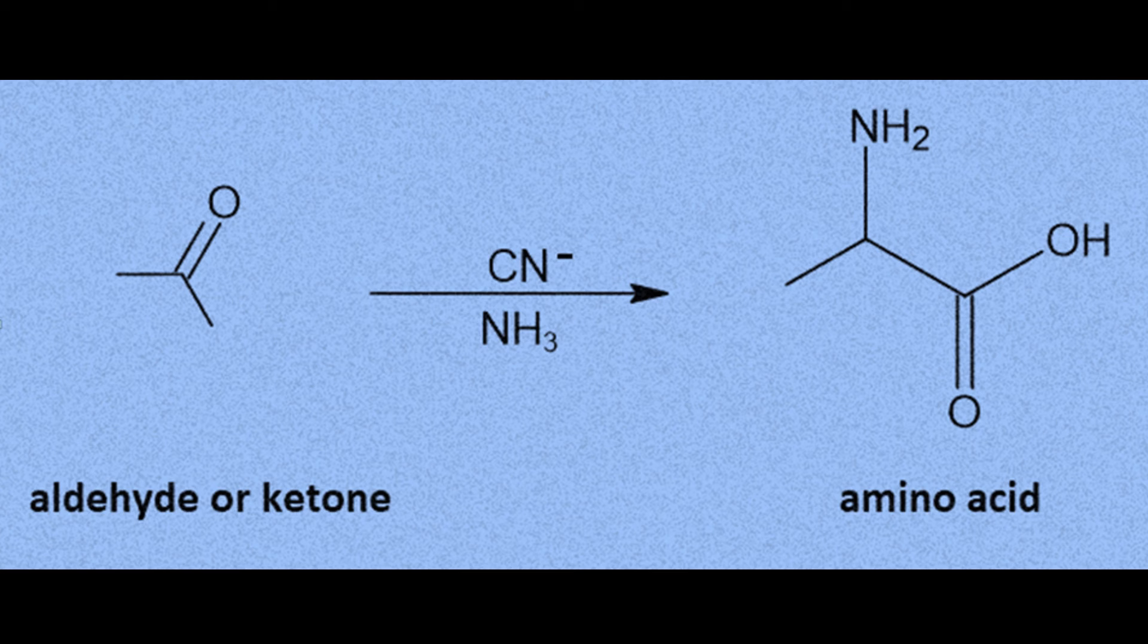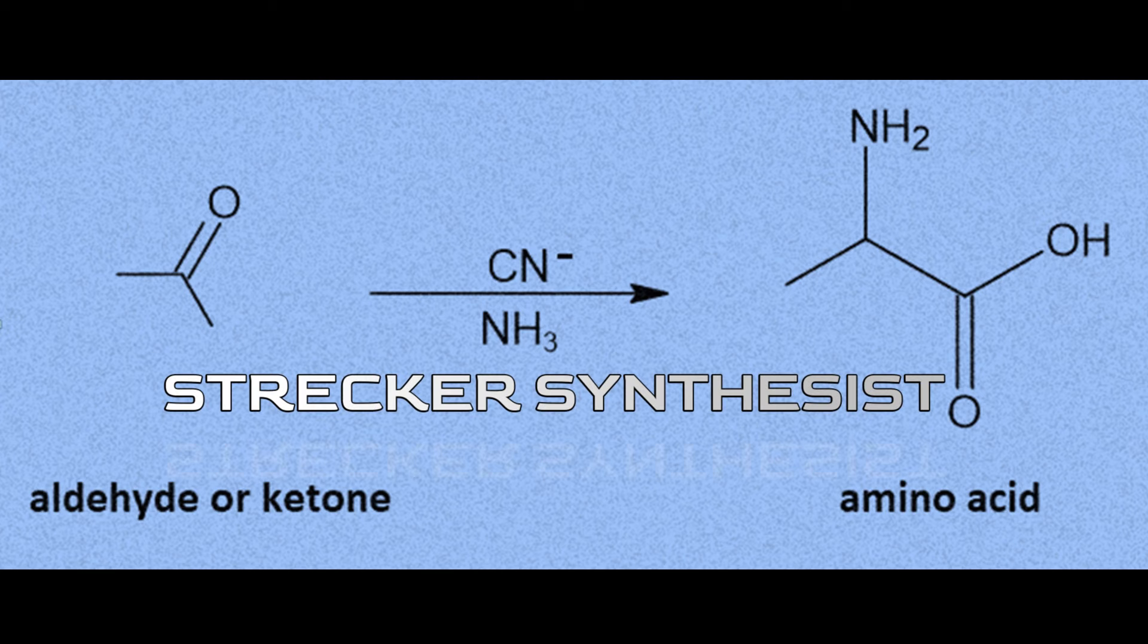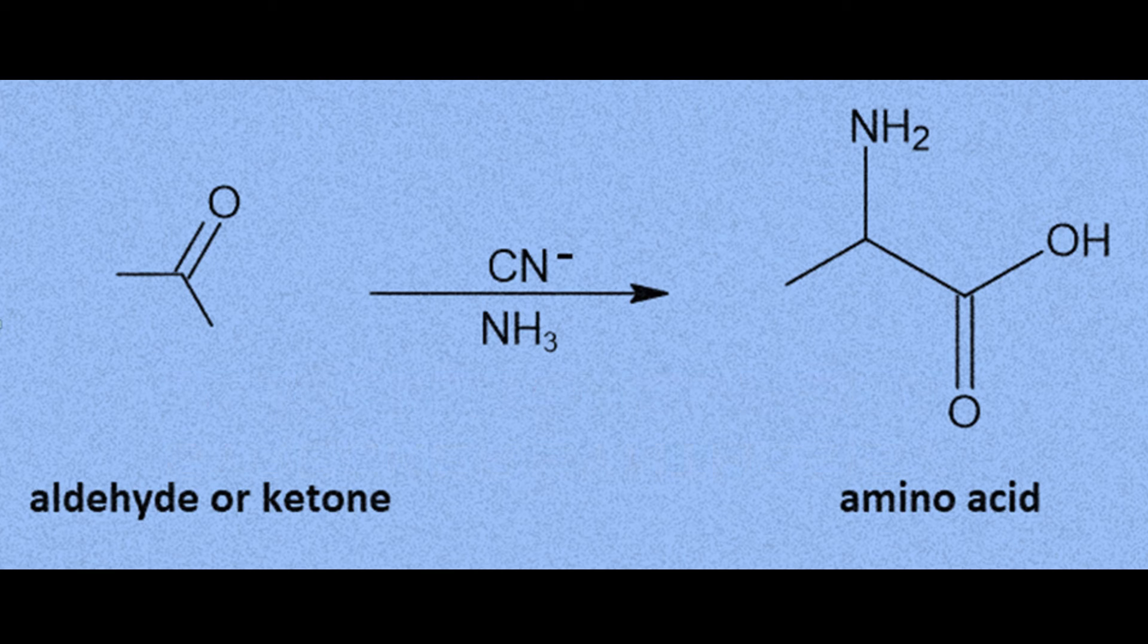The Strecker synthesis allows for the obtaining of amino acids with aldehydes or ketones, ammonia, and cyanide.